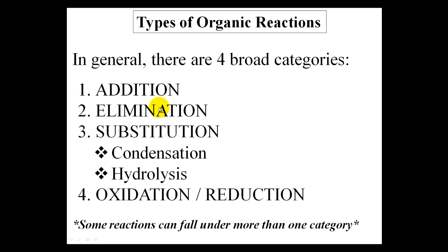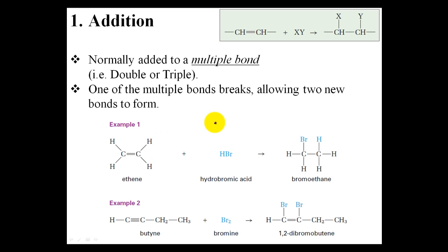Before we get started with the more specific types of reactions, let's get into the generic ones first and just try to recognize the patterns that they hold. The first type of reaction we'll be looking at is the addition reaction. This normally occurs when a small molecule, element, compound, or functional group is added to a multiple bond — either a double or a triple bond.